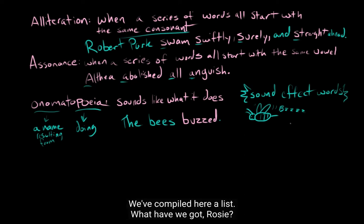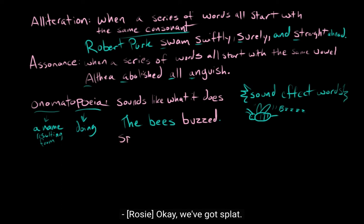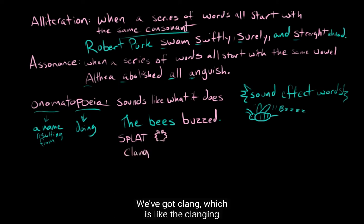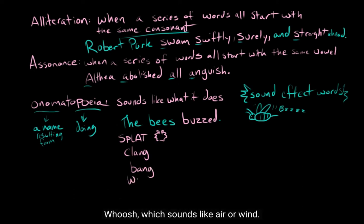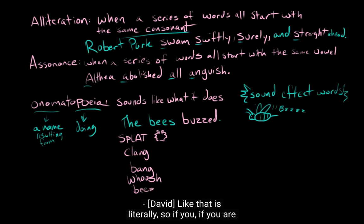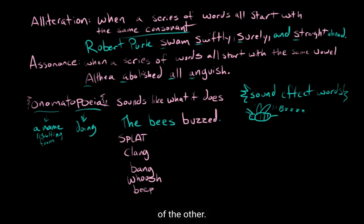But that's not the only example of onomatopoeia. We have compiled here a list. What have we got, Rosie? Okay, we've got splat. It's kind of the sound of something hitting pavement. Yep. We've got clang, which is like the clanging of a bell. We've got bang, which sounds like something exploding. Whoosh, which sounds like air or wind. Beep. Yeah. Beep sounds like a beeping. Like, that is literally. So if you are trying to summon up the actual sound of a thing and transcribe it and use it as a noun or verb, you're using onomatopoeia.